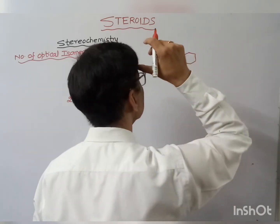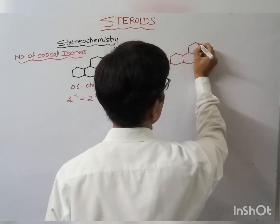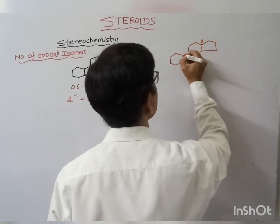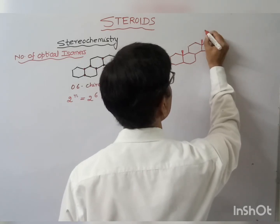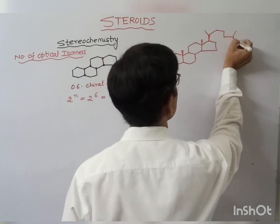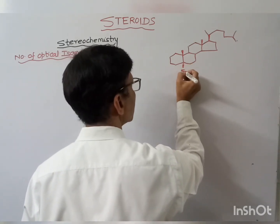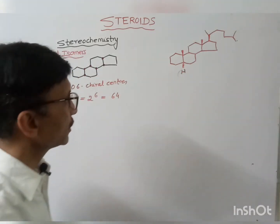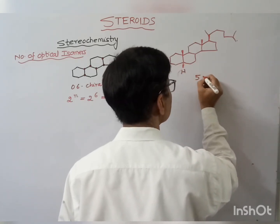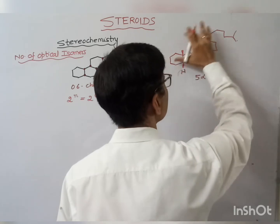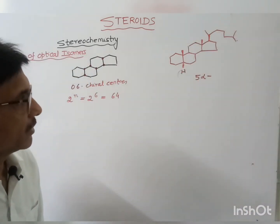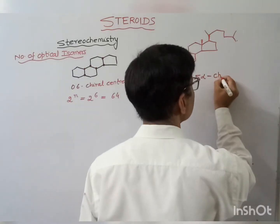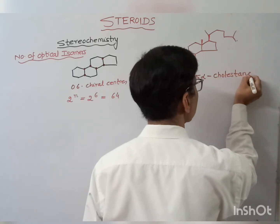Now if we take a cholesterol nucleus — this is our cholesterol nucleus — it can be named as 5-alpha cholestane. At the fifth position the hydrogen is below, that is 5-alpha. The number of carbon atoms in this ring is 27 carbon atoms, that's why it is called 5-alpha cholestane.